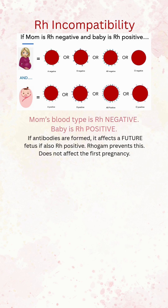With this, antibodies can be formed that would affect a future fetus if it was also RH positive. So in order to prevent this, we give moms RhoGAM, and RhoGAM stops this immune response that forms antibodies to the RH positive blood type.